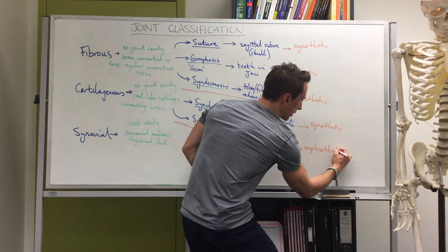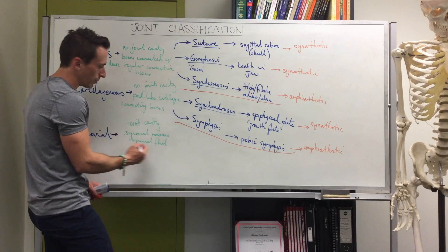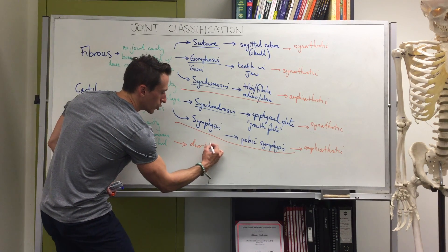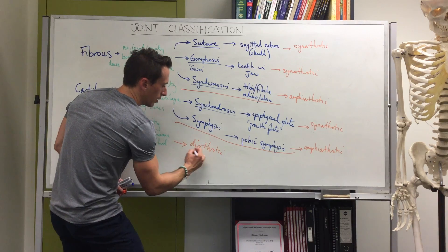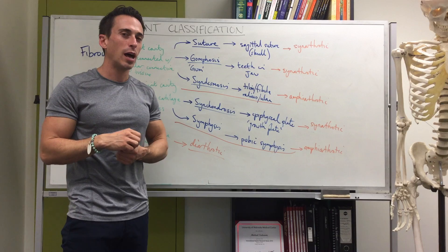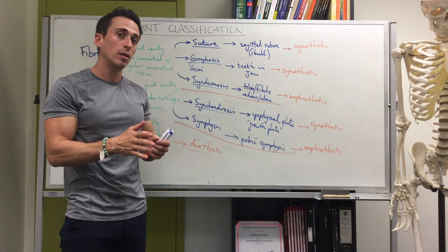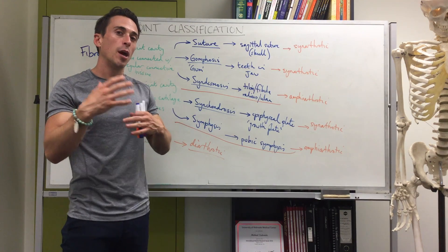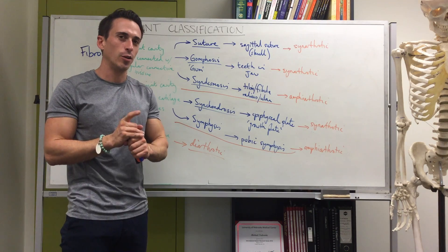You may be wondering when we ever use 'diarthrotic.' Diarthrotic is saved for the synovial joints, because synovial joints are all freely movable — it's just a question of how freely movable they are. Sometimes they move in one plane, sometimes two planes, sometimes many planes, and that's what we'll talk about in the next video.